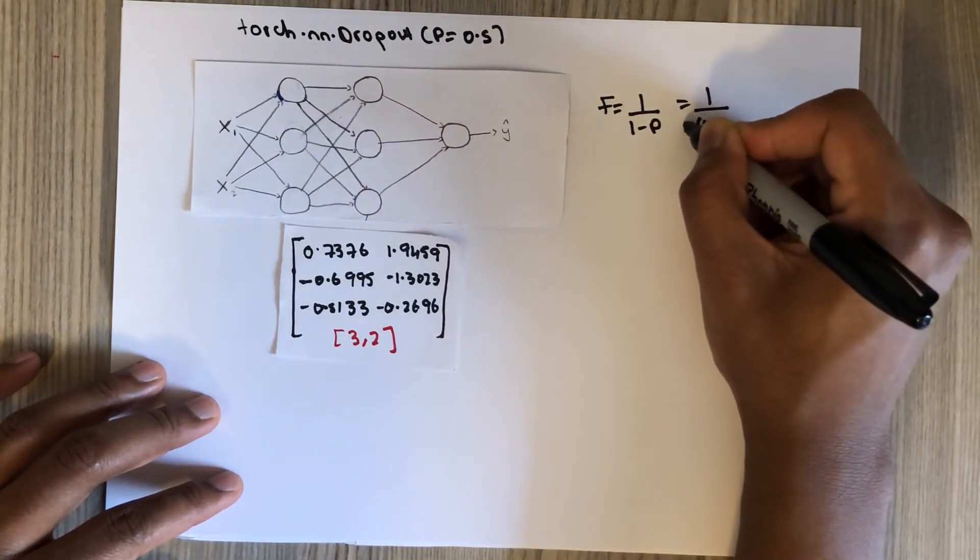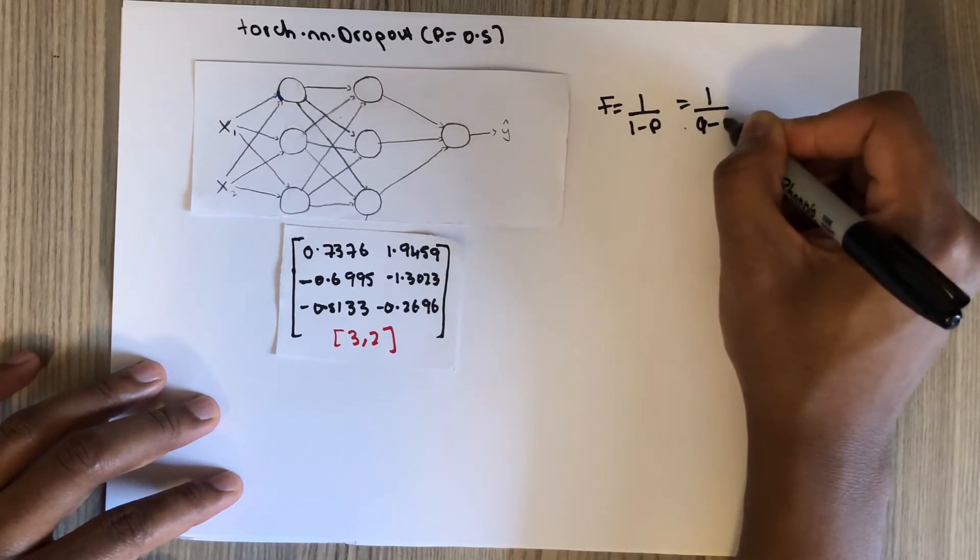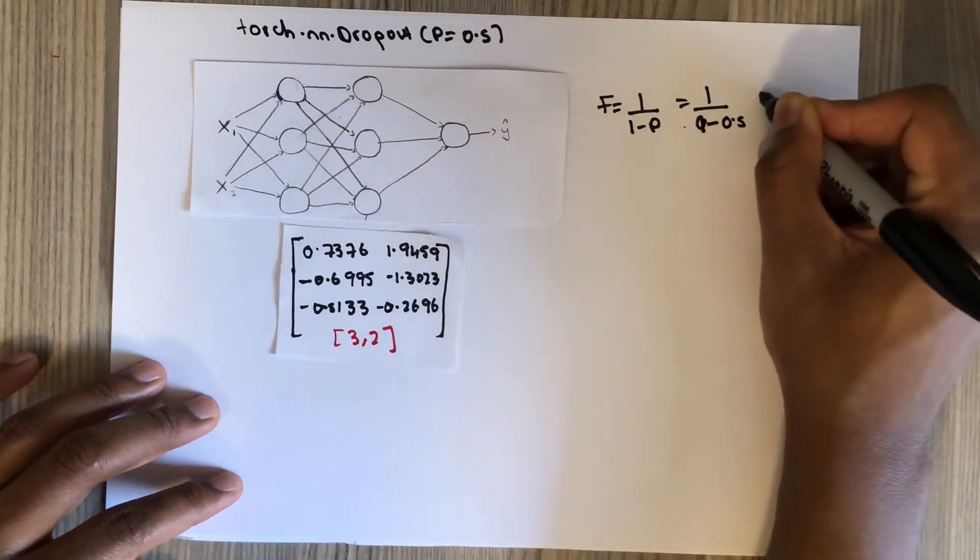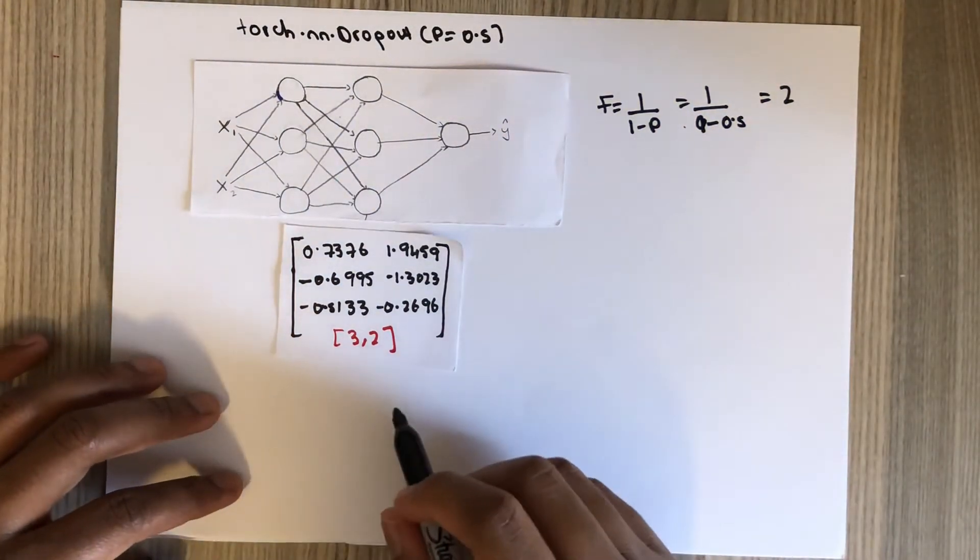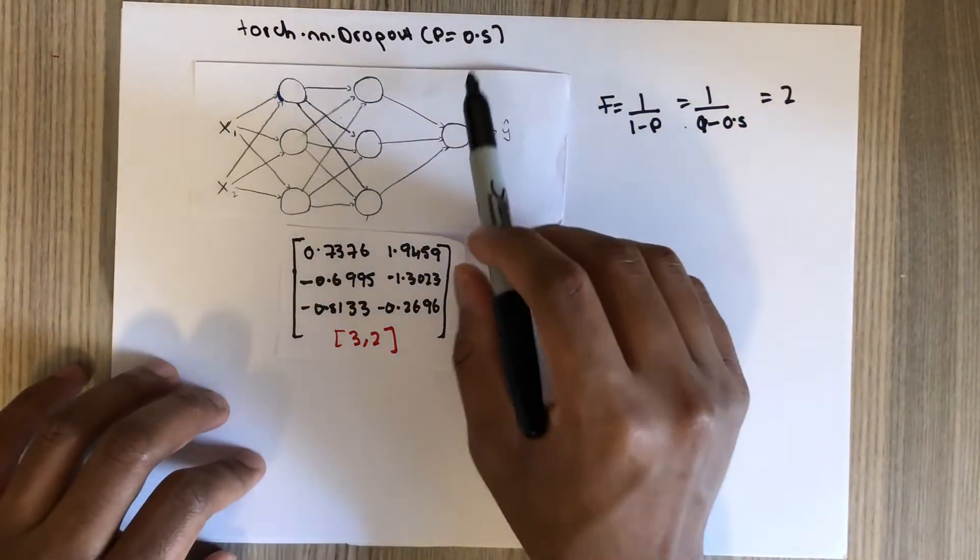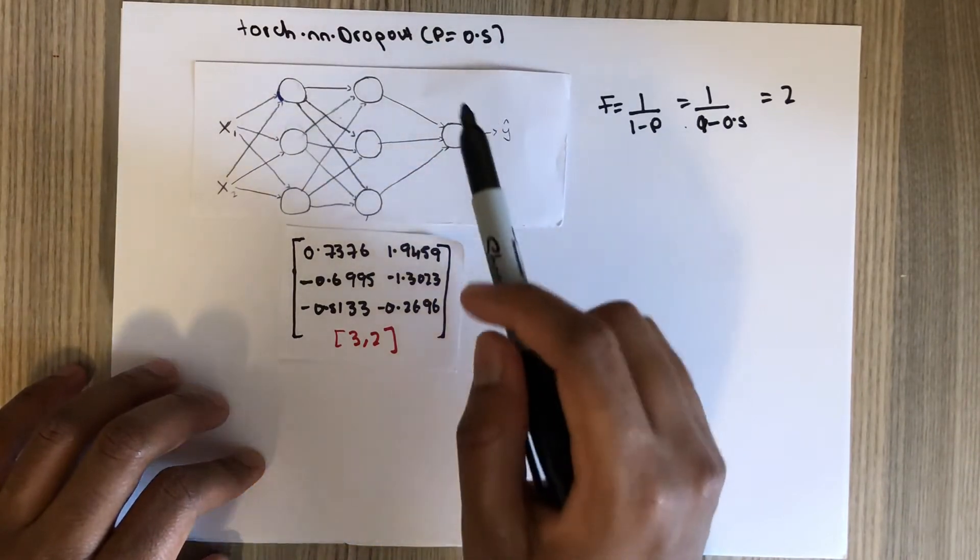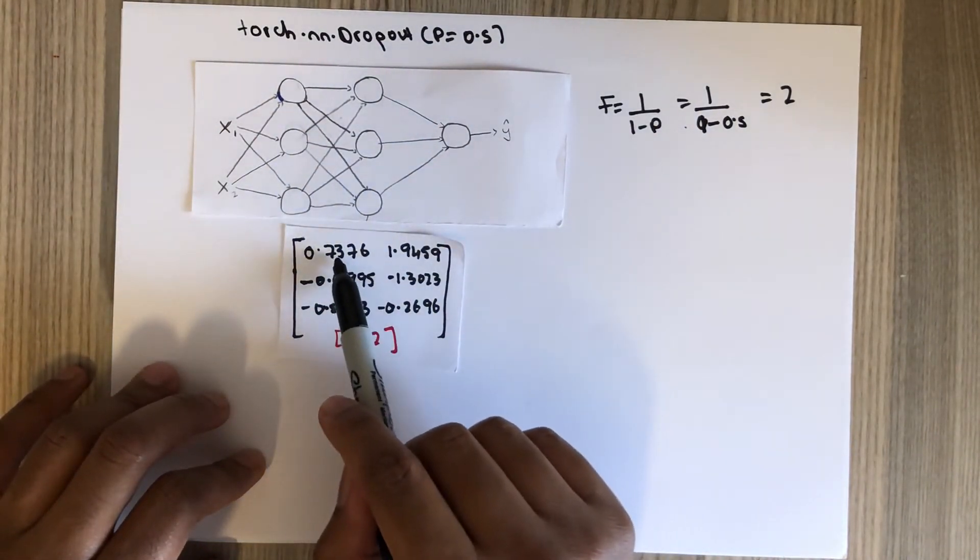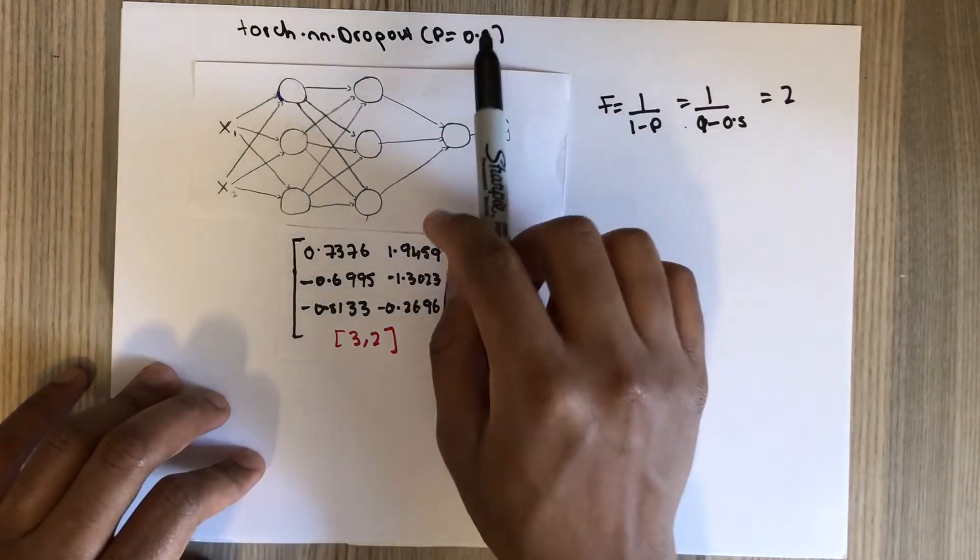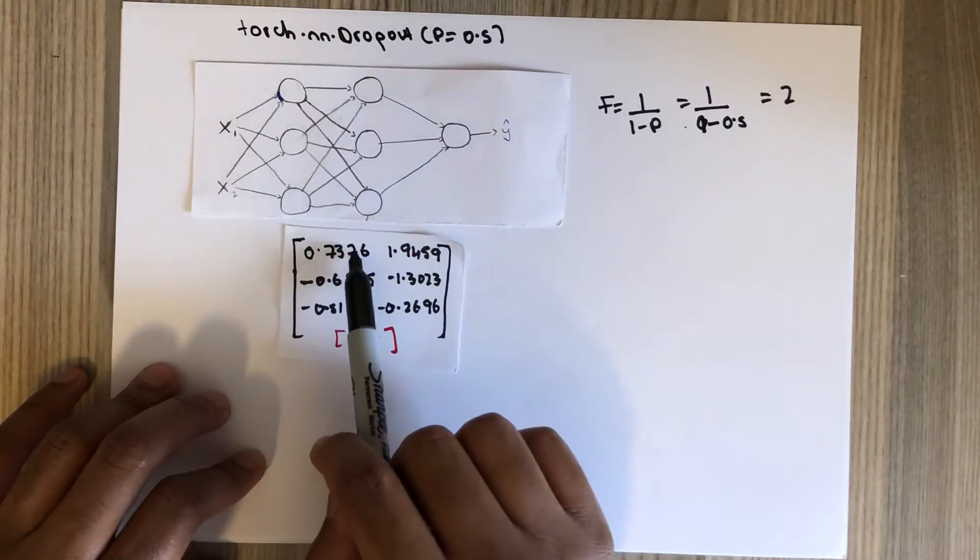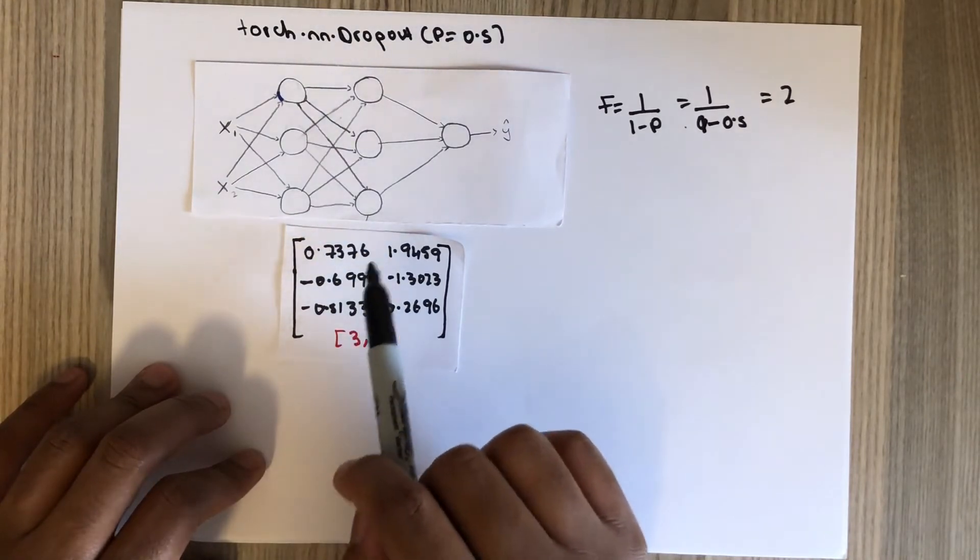If this was 1, it means that there's a 100% chance that any of these values will be made to zero. And if this was 0, there's a 0% chance that any of these values will be zero.